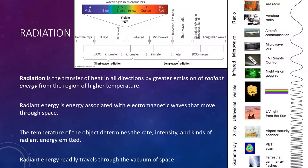Radiation is the transfer of heat in all directions by the emission of radiant energy from regions of higher temperature. Radiant energy is energy associated with electromagnetic waves that move through space. The temperature of the object determines the rate, intensity, and kinds of radiant energy emitted. Unlike conduction and convection, which need a medium to travel through, radiant energy travels readily through the vacuum of space. Thus, radiation is the heat transfer mechanism by which solar energy reaches the Earth.